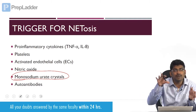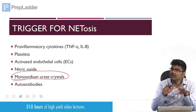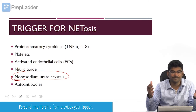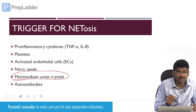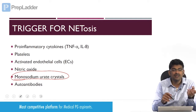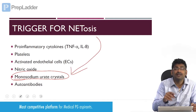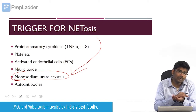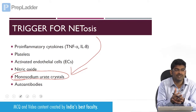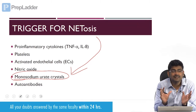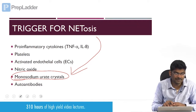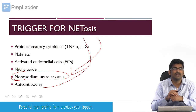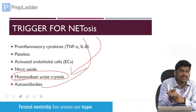We give steroids to suppress the inflammation. In acute attack of gout, you do not give allopurinol. Monosodium urate crystals are a trigger for NETosis. Even though urate is not a pathogen, our body detects it as a foreign substance. Autoantibodies will also trigger NETosis.